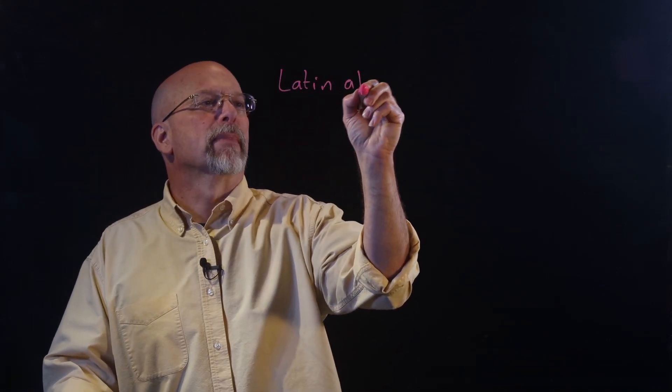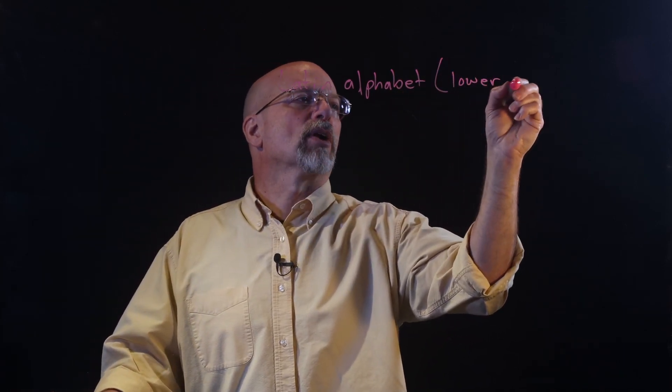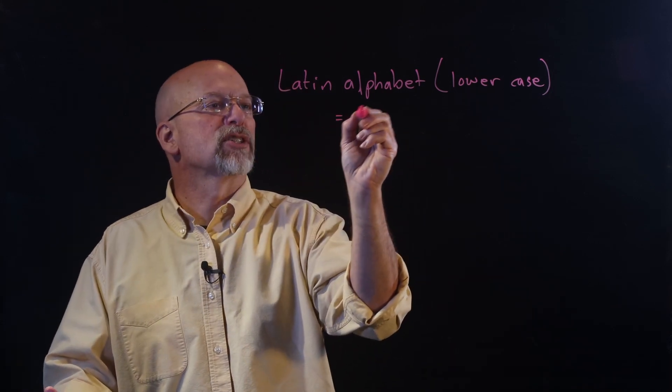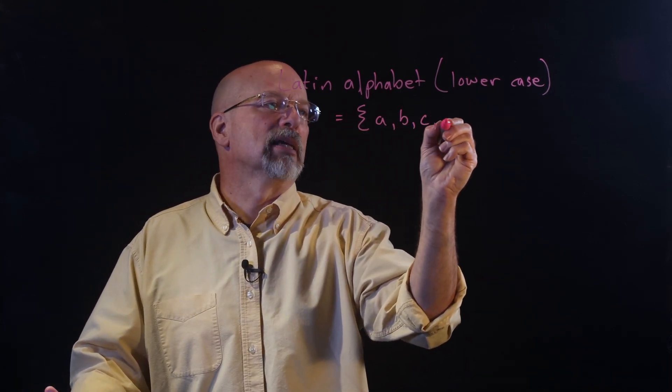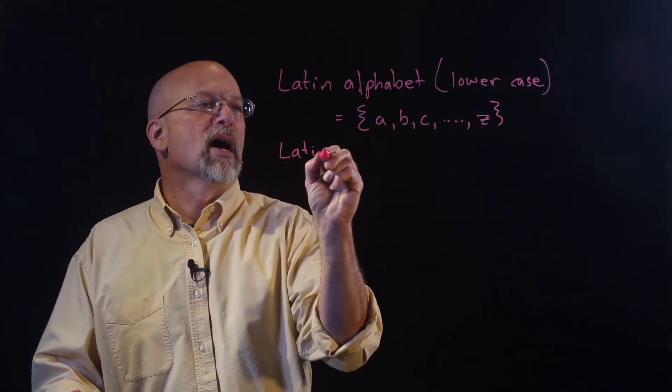You've heard the term alphabet before — A through Z. Whenever we're using it in the context of discrete math, an alphabet is really just a finite set of elements. I have a finite number of characters I can enter with this keyboard. We have other alphabets — for example, the Latin alphabet, the one you're familiar with. The lowercase set is A, B, C, all the way up to Z. But we also have the uppercase.